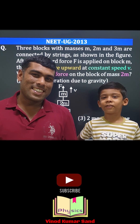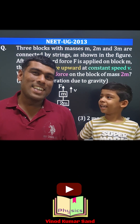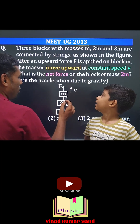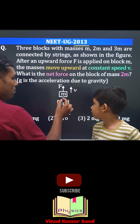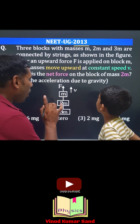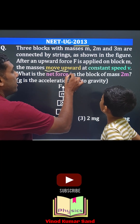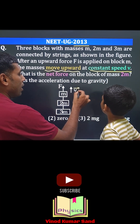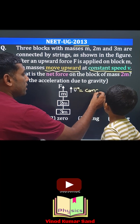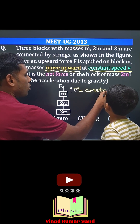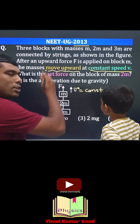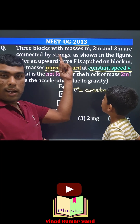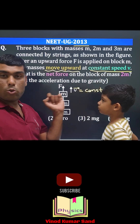In this question from NEET 2013, there are three blocks M, 2M, and 3M. They are all moving upward at a constant speed V. This means their velocity is constant — the direction is fixed and the magnitude is also constant.